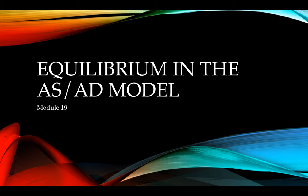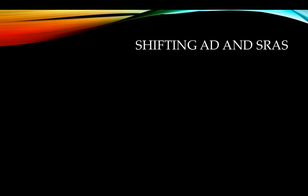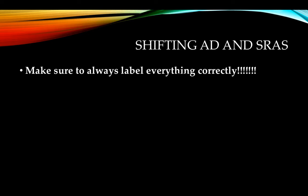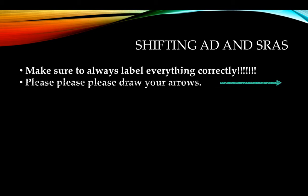Here we are, Module 19 — equilibrium in the aggregate supply and aggregate demand model. This is extremely important because it will show you the graphs, how to label them correctly, how they move, and what they tell us. This is another module you must understand. First, make sure you label everything correctly — do not skimp on your labels on your FRQs. You lose points for missing labels and gain points if you label correctly.